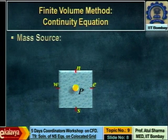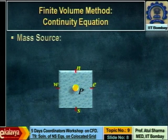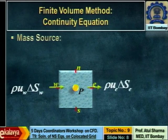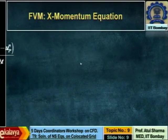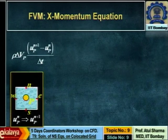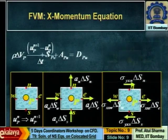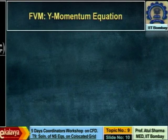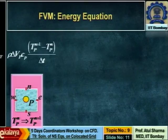I will not discuss the finite volume method for collocated grid in detail because I had a separate topic on that after yesterday's lab session. The same collocated grid finite volume method is used here; I will review it in three or four slides. This is the way we discretize the continuity equation, the momentum equation — including rate of change of x-momentum, viscous force, and pressure force in the x-direction — and similarly for the y-momentum and energy equations.